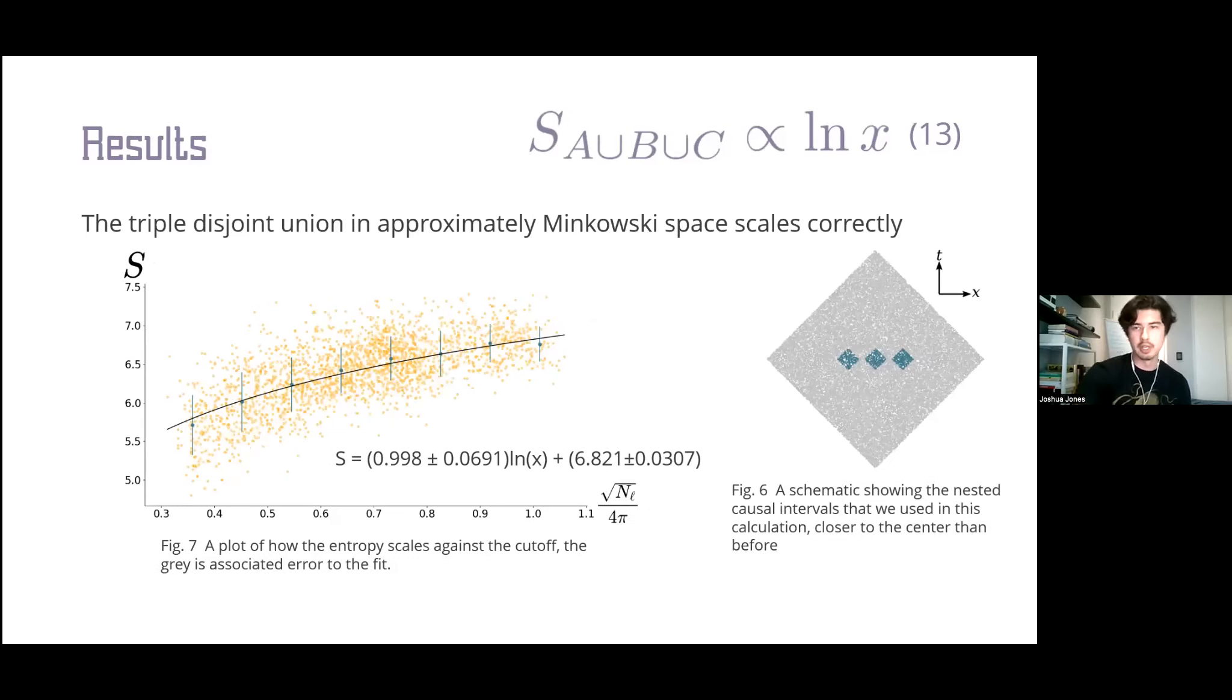After this we treated the three diamond case, which is shown here. This is basically the same, and once again after calculations, we retrieved the expected scaling, which is one times the logarithm of the characteristic length of a sub-interval. These results definitely lend credence to the fact that our disjoint truncation scheme is correct and indicate that our understanding of the truncation scheme in general is correct.